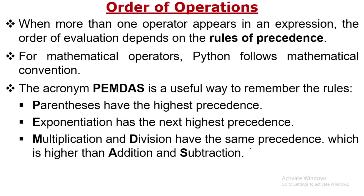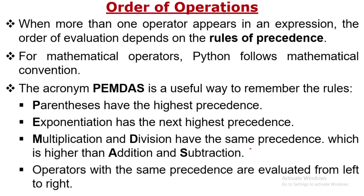Multiplication and Division have higher precedence than Addition and Subtraction. Operators with the same precedence are evaluated from left to right. So if a plus operator and a subtraction operator are in the same expression, since addition and subtraction are in the same precedence category, the evaluation goes from left to right.